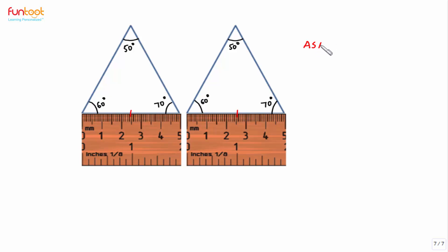Now by ASA rule of congruency, we can say that the two triangles are congruent.